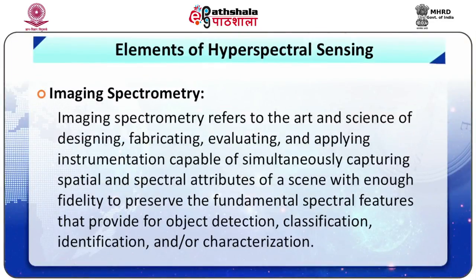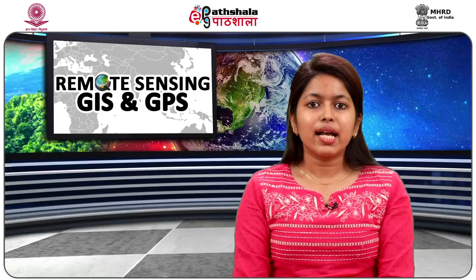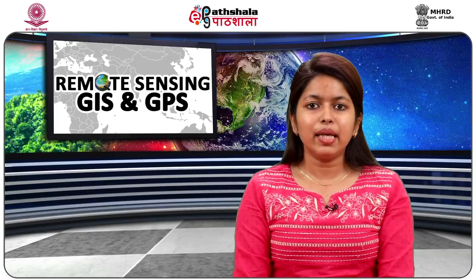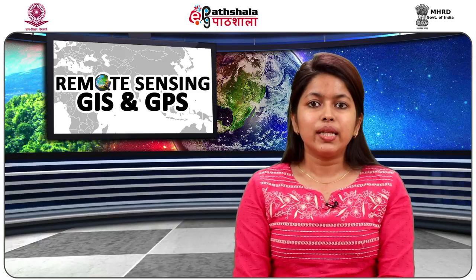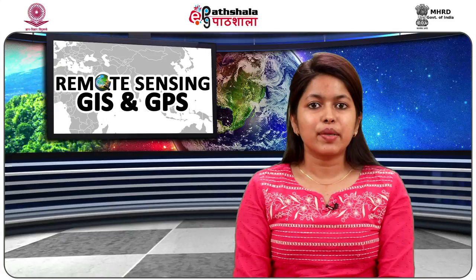We will now discuss imaging spectroscopy. Imaging spectroscopy refers to the art and science of designing, fabricating, evaluating, and applying instrumentation capable of simultaneously capturing spatial and spectral attributes of a scene with enough fidelity to preserve the fundamental spectral features that provide for object detection, classification, identification, and characterization. A variety of optical techniques can be employed to develop a sensor capable of capturing hyperspectral imagery, including dispersive prism or grating spectroradiometers.